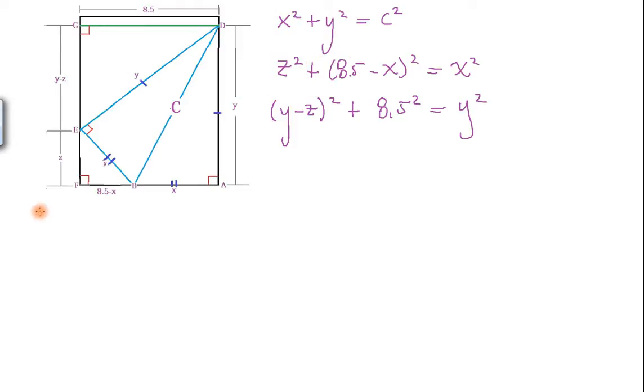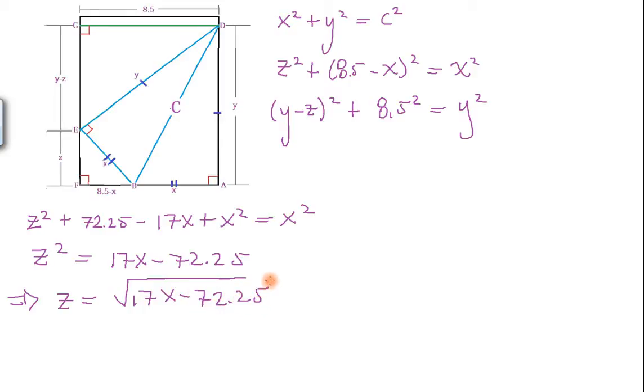Now, let's start with the top one. So Z squared plus 8.5 squared is 72.25 minus 2 times 8.5 is 17X plus X squared equals X squared. Now, X squared is canceled, so we have that Z squared is equal to 17X minus 72.25. So this implies what? That Z is equal to the square root of this term. And a positive, right? Because it's a length.